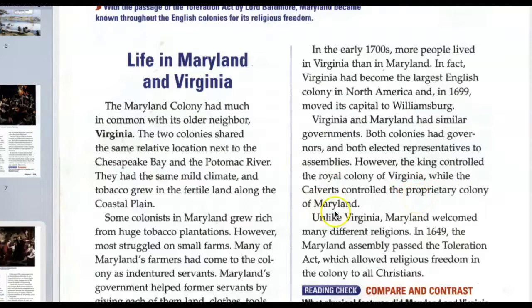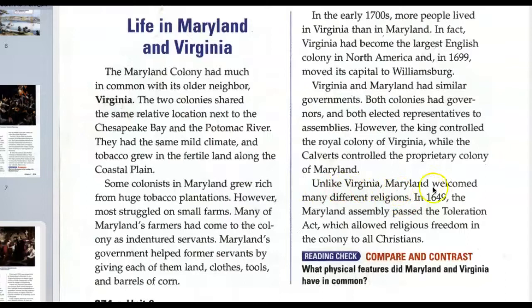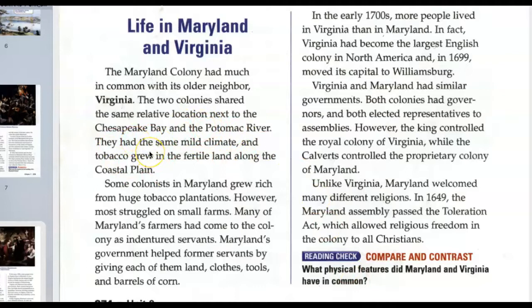In the early 1700s, more people lived in Virginia than in Maryland. Virginia had become the largest English colony in North America and in 1699 moved its capital to Williamsburg. Virginia and Maryland had similar governments — both had governors and elected representatives to assemblies. However, the king controlled the royal colony of Virginia while the Calverts controlled the proprietary colony of Maryland. Unlike Virginia, Maryland welcomed many different religions. In 1649, the Maryland Assembly passed the Toleration Act, which allowed religious freedom for all Christians, since in England only the Church of England was permitted.